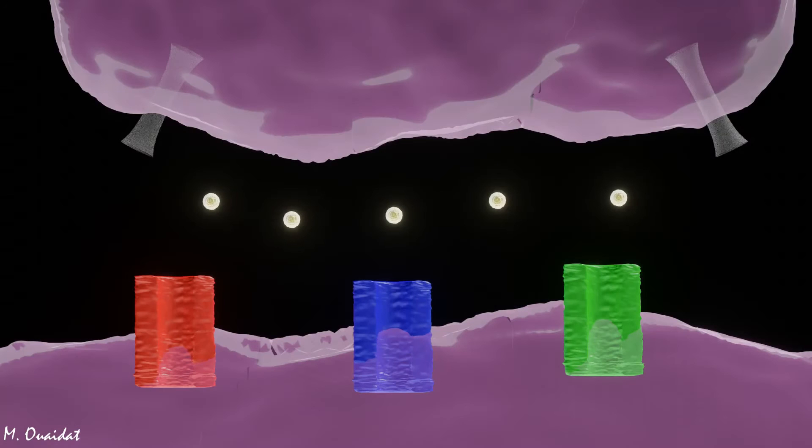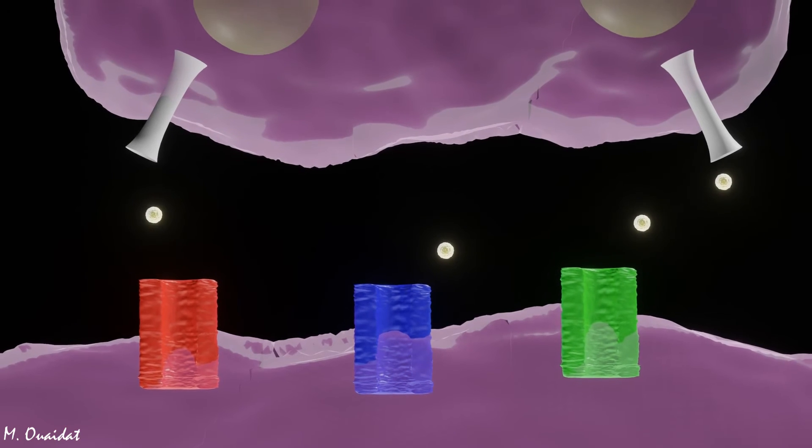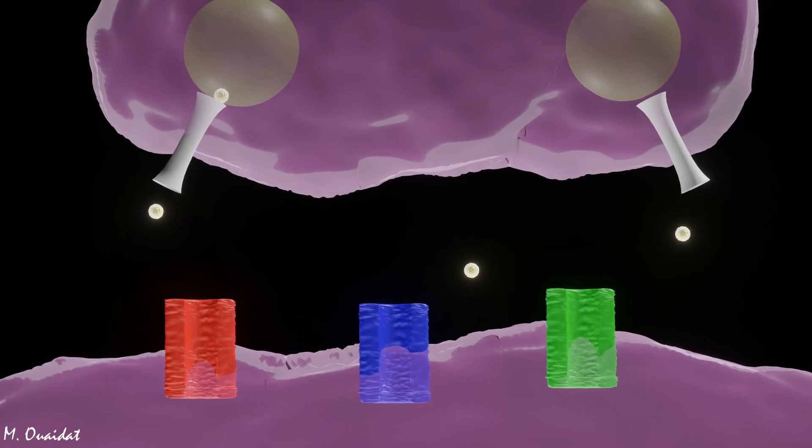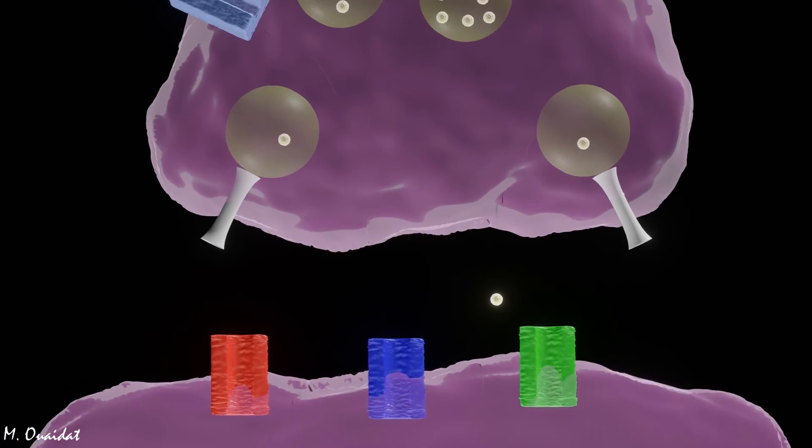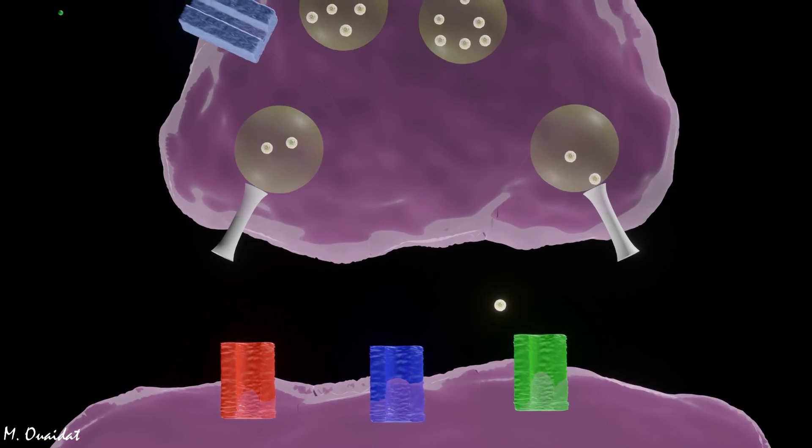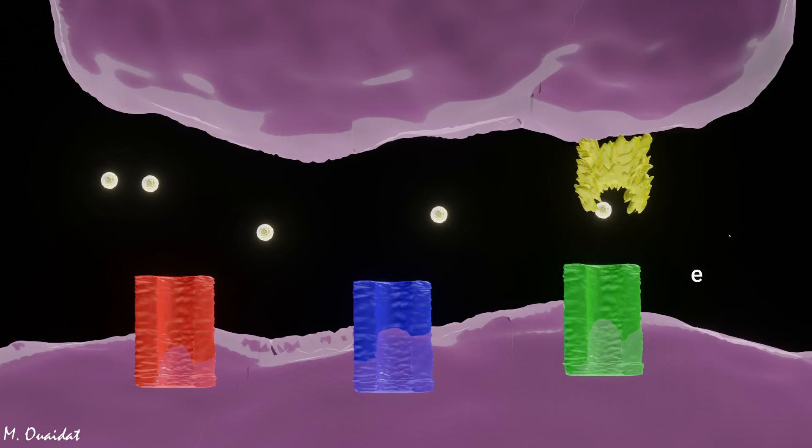After transmission of the nerve message, the neurotransmitters that remain in the synaptic cleft can be recaptured by neurotransmitter transporters located along the plasma membrane of the terminal end, to be recycled and reused again, or degraded by specific enzymes.